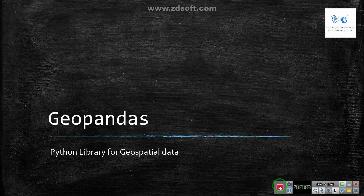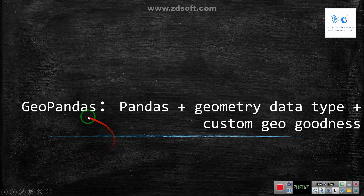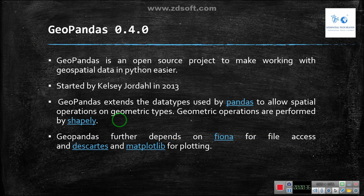Welcome. Today in this video I am going to talk about GeoPandas. GeoPandas is a Python library for Geospatial Analysis. GeoPandas is a combination of the Pandas library and geometric data types plus custom geo goodness. The current version of GeoPandas is 0.4.0. GeoPandas is an open source project to make working with geospatial data in Python easier.